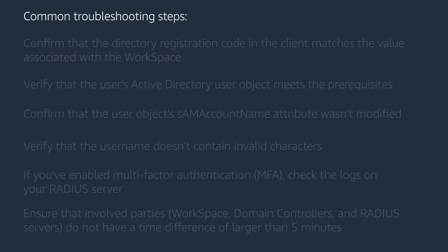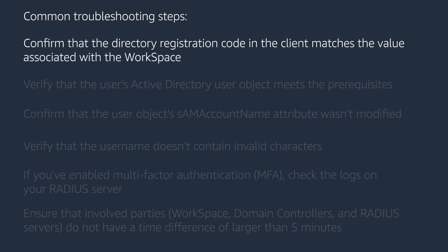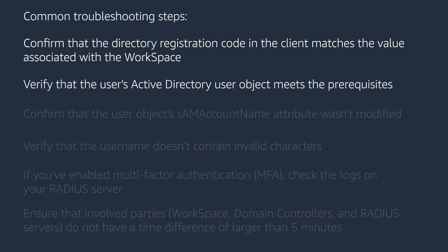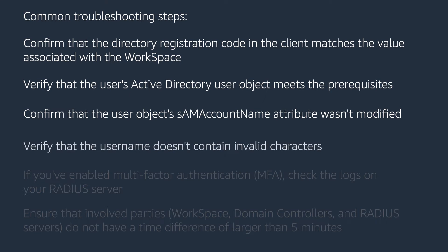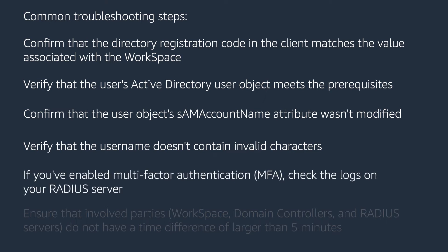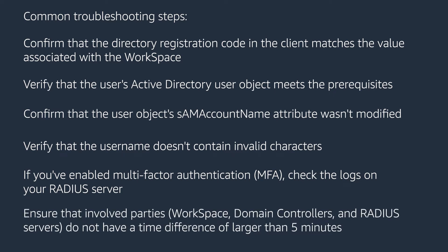On the screen, we have a list of common troubleshooting steps. I'll be showcasing some of these steps within this video. Confirm that the directory registration code in the client matches the value associated with the workspace. Verify that the user's Active Directory user object meets the prerequisites. Confirm that the user object's SAM account name attribute wasn't modified. Verify that the username doesn't contain invalid characters. If you've enabled multi-factor authentication, check the logs on your RADIUS server. Ensure that involved parties — workspace, domain controllers, and RADIUS servers — do not have a time difference of larger than five minutes.